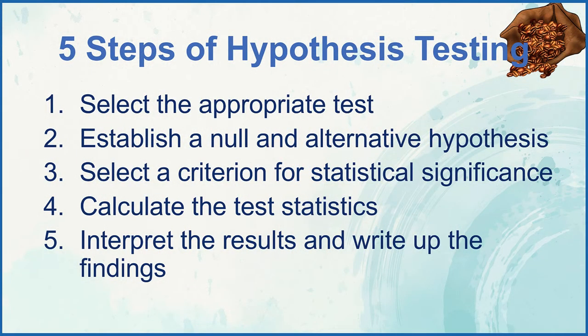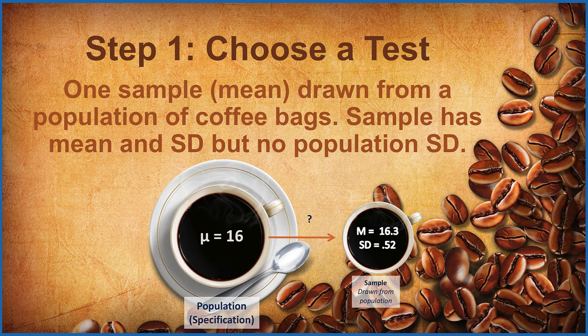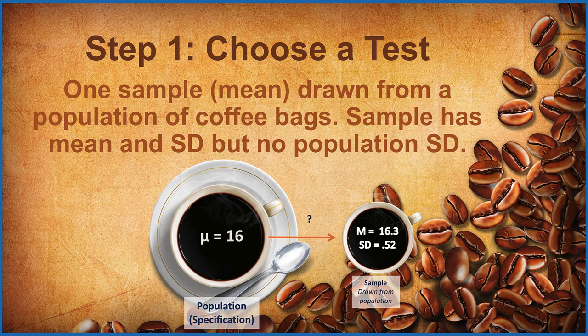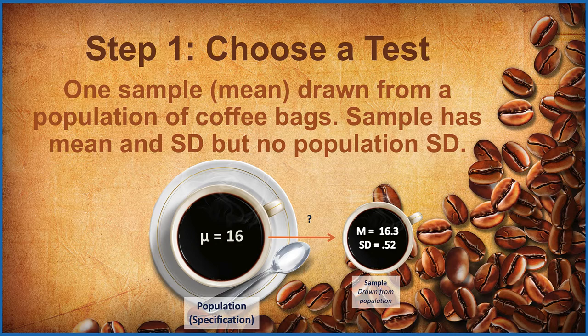We will use our five steps of hypothesis testing to test this research question, and we'll begin with step 1 where we select the appropriate test. Well, let's determine what data we have. We have a single sample. It is a sample of bags of coffee, each of which has been weighed, and so we can determine a sample mean from the weights of those bags of coffee.